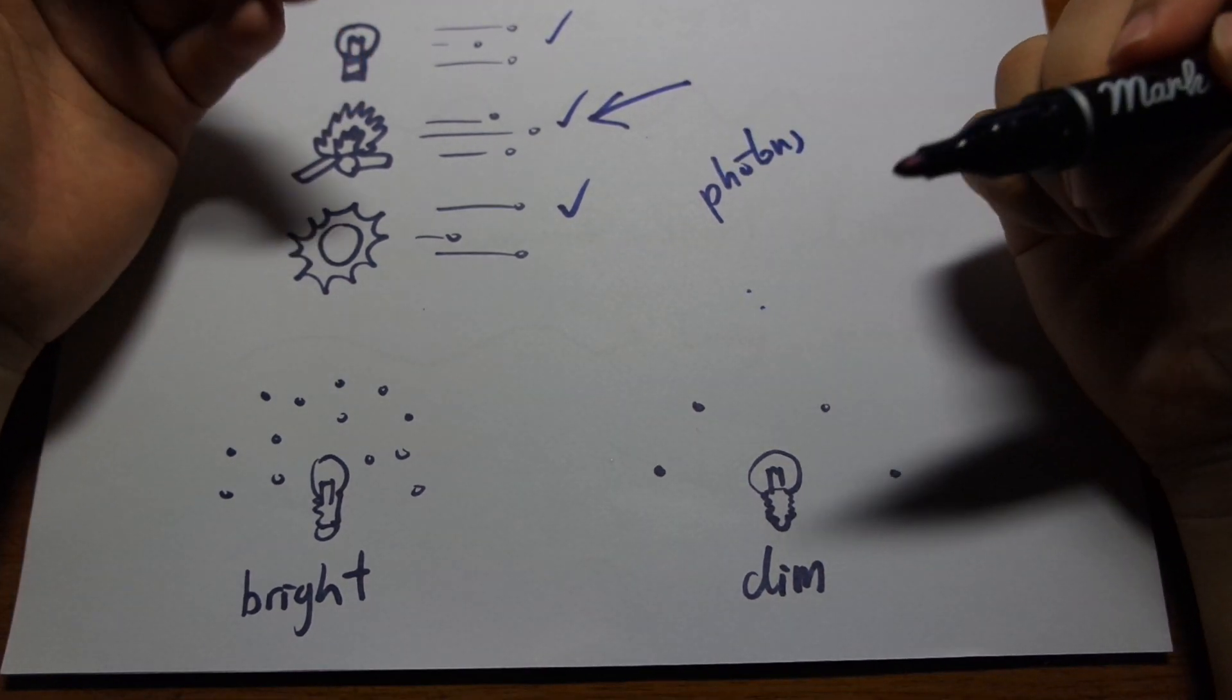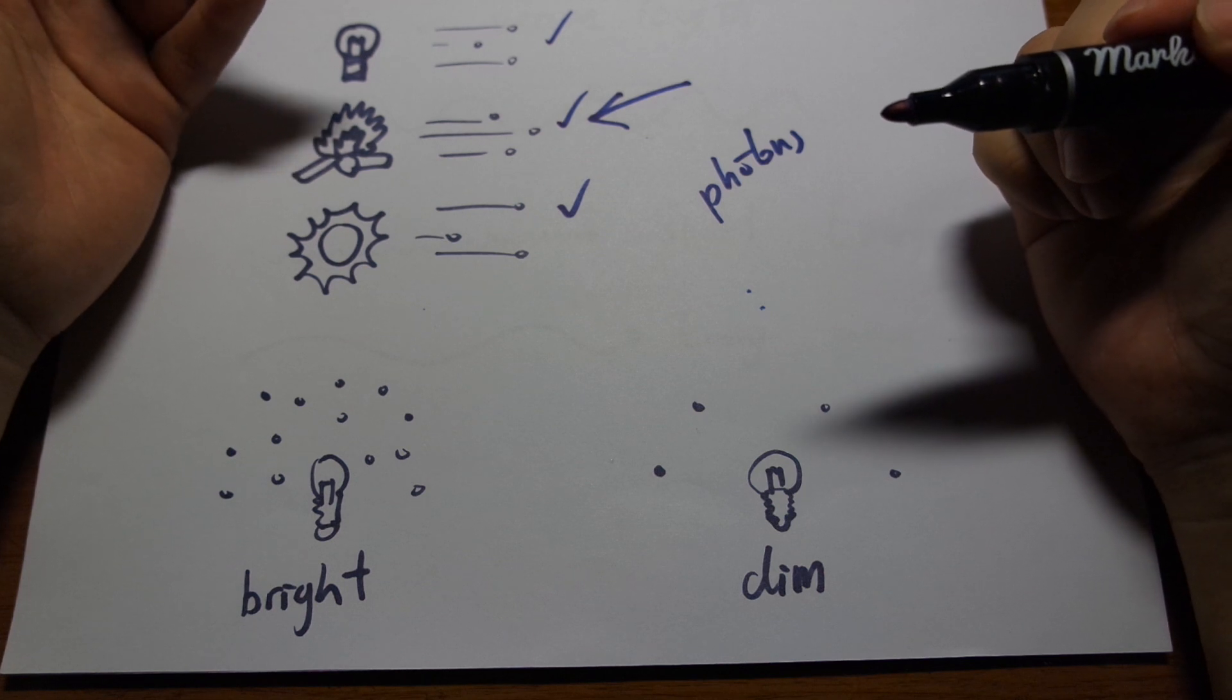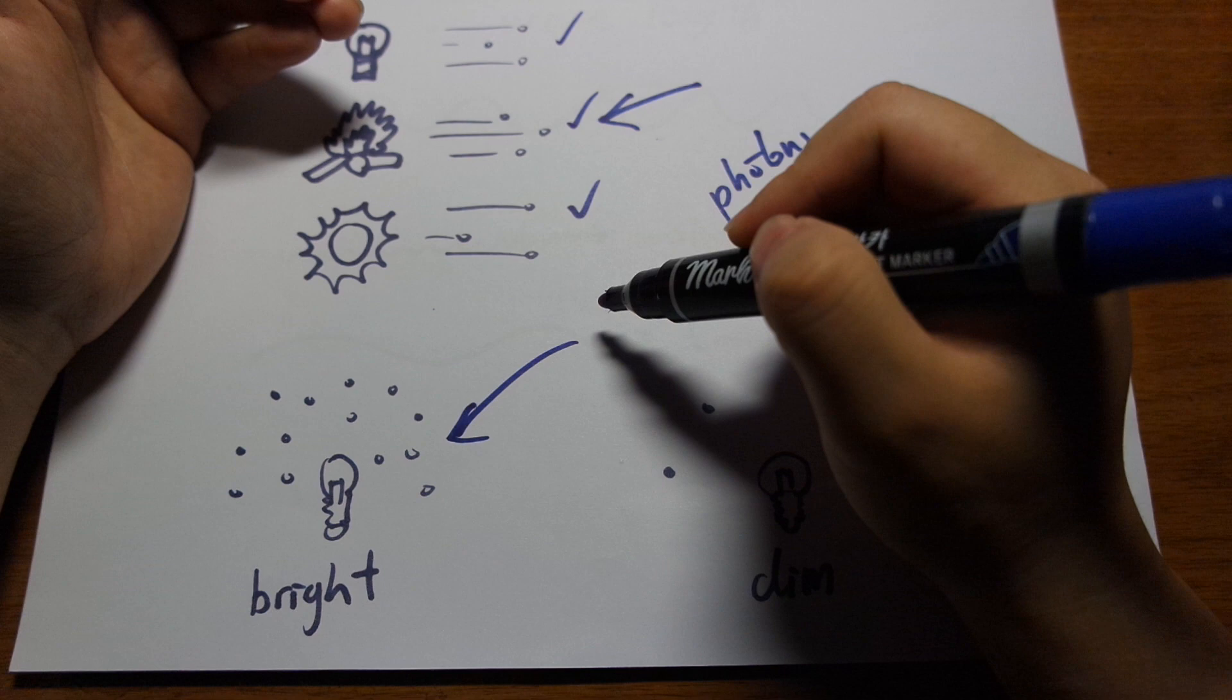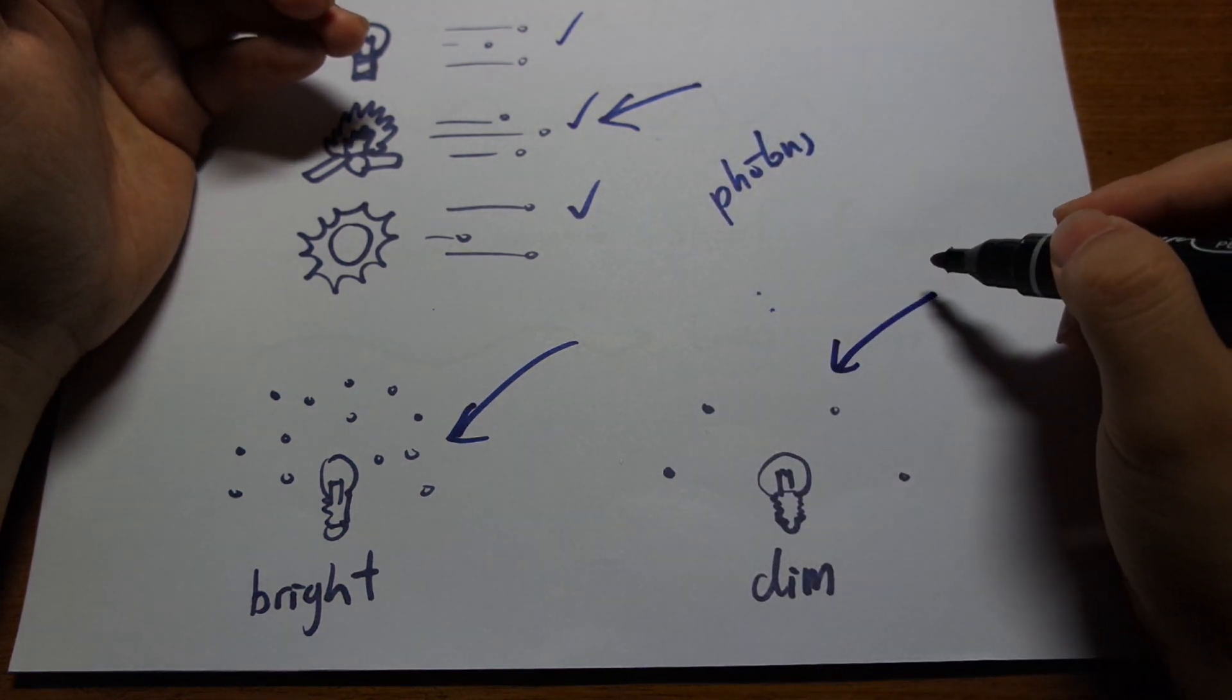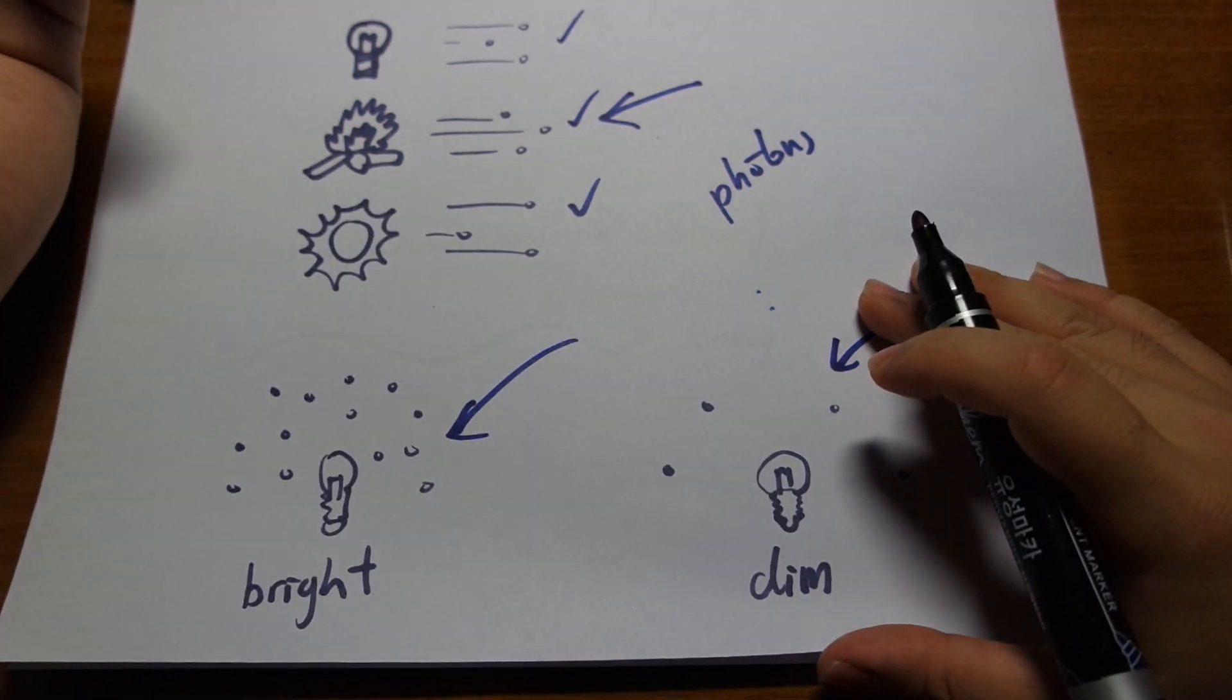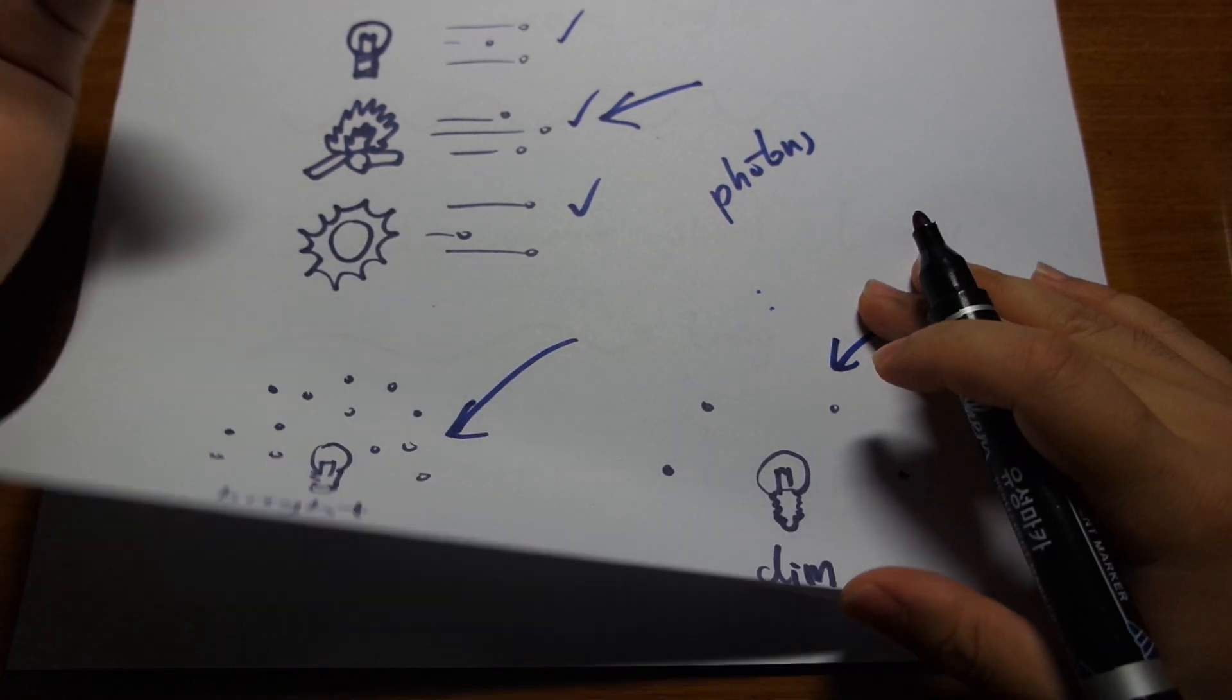Now the difference between a bright light and a dim light is just the amount of photons coming out. So bright light has lots of photons coming out of it. And a dim light doesn't have as much. So brightness, intensity, that is a matter of how many photons are coming out.